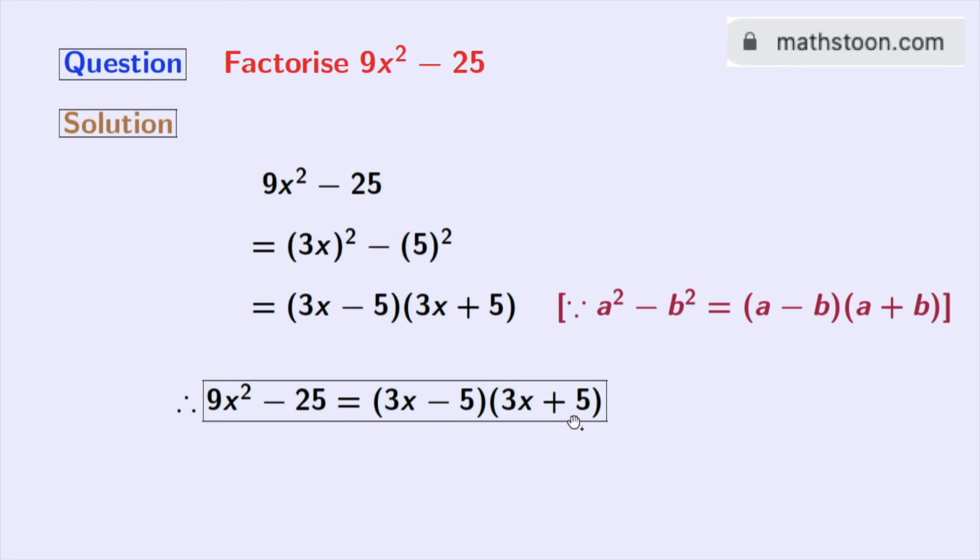So finally, we get 9x square minus 25 is equal to 3x minus 5 times 3x plus 5. This is our desired factorization.